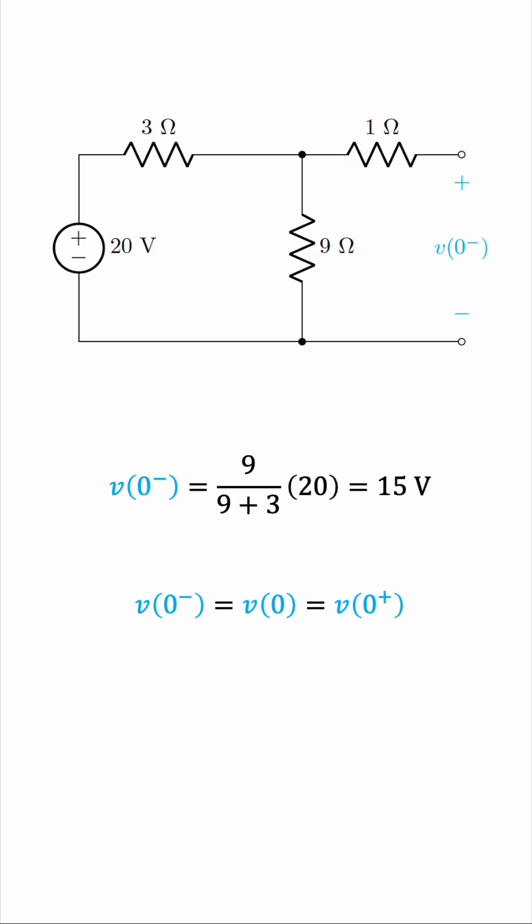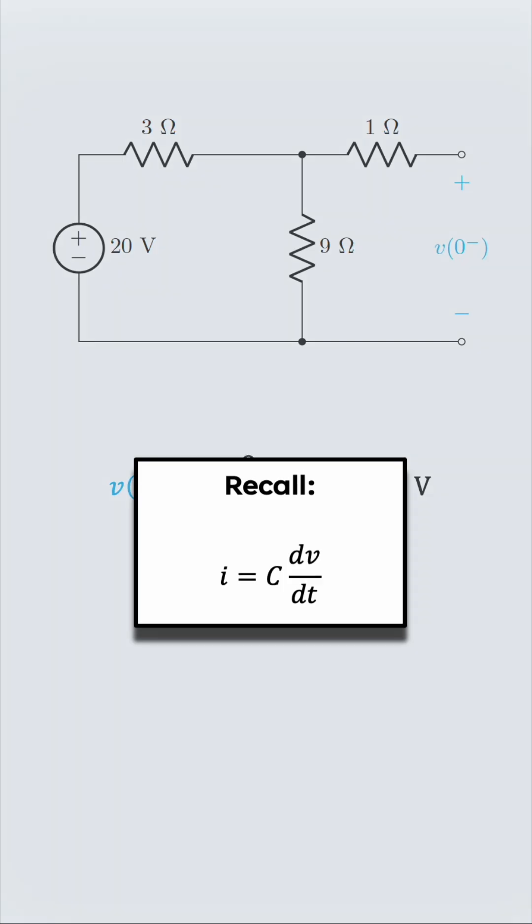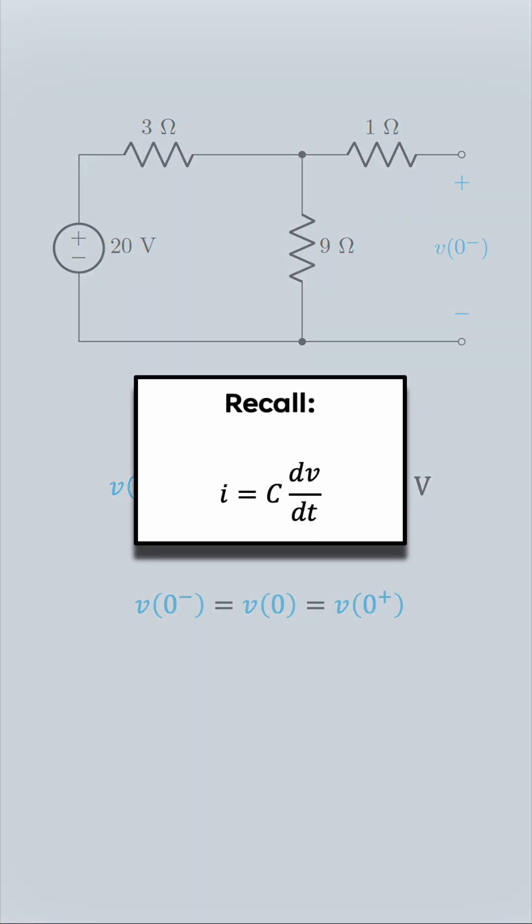Why is that the case? And why is it important? The reason comes from the current formula for a capacitor. Recall that the current through a capacitor, or the displacement current to be precise, is its capacitance times the derivative of voltage. If the voltage across a capacitor were to change abruptly, say it were to change all of a sudden in almost no time, then from the equation this suggests that the current would be infinite, which of course is physically impossible. That's why the voltage across a capacitor cannot change in an instant.